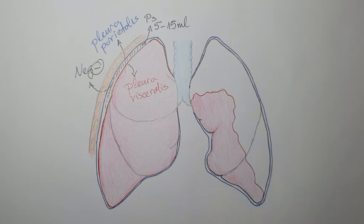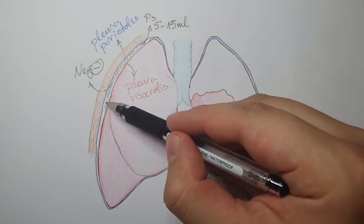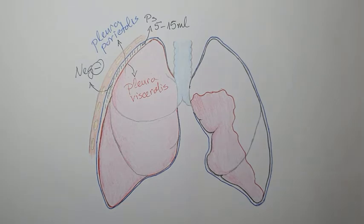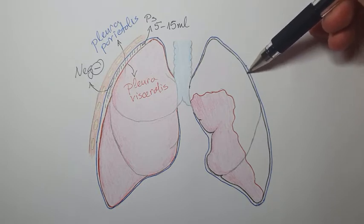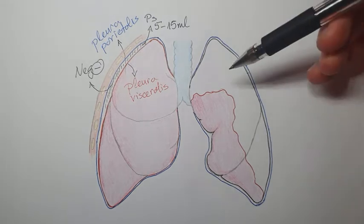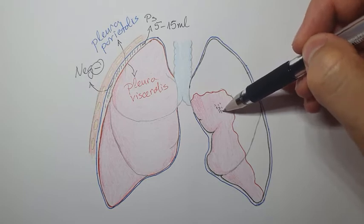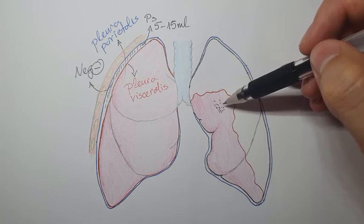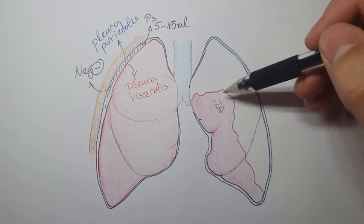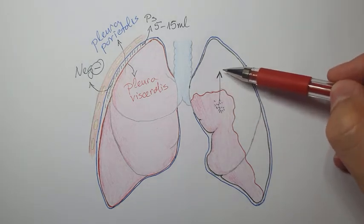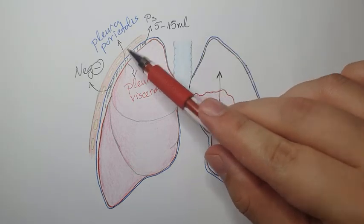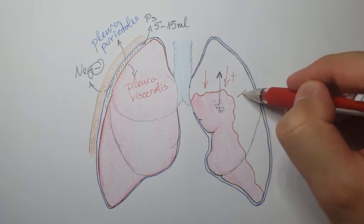The lung tissue has no fibrous skeleton and tends to collapse, so negative pressure in the pleural space keeps it expanded. But if this negative pressure is lifted — for example, due to a break in the lung tissue from a disease like bronchiectasis — air enters the pleural space, the pressure becomes positive, and it starts compressing and collapsing the lung.